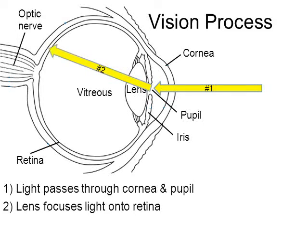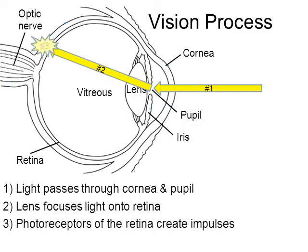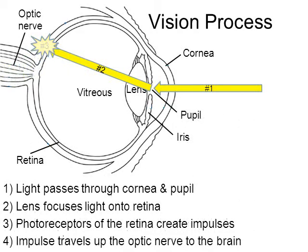The lens will focus light onto the back of the eye, called the retina. The retina will then create an impulse — an electrical signal. That's what the flashing spike-shaped object is in the animation — that's the impulse. The last step, step number four, is that impulse travels up the optic nerve and into your brain, and your brain will determine what it is that you're seeing. That's the overall process of vision.